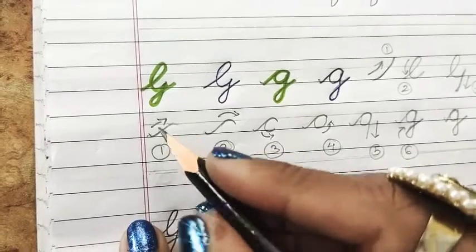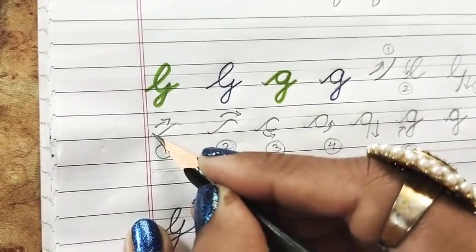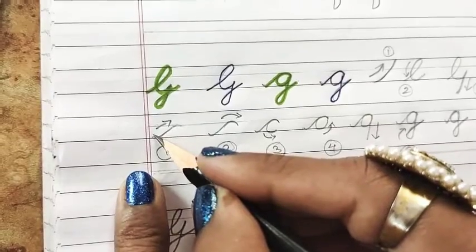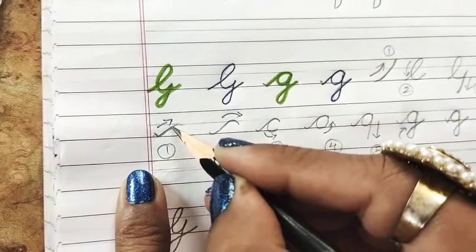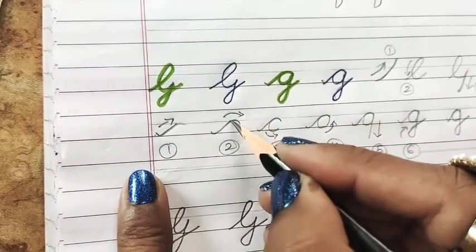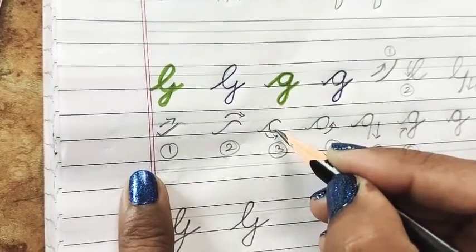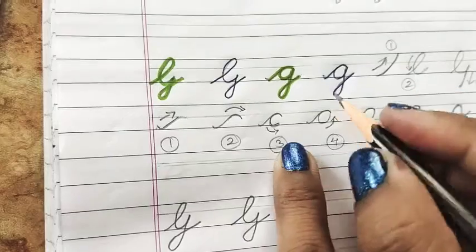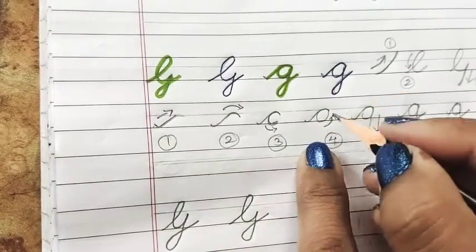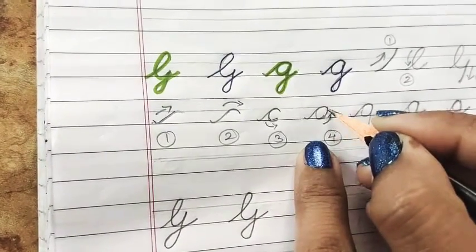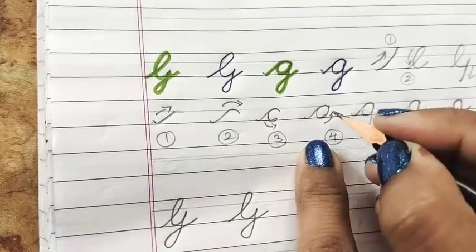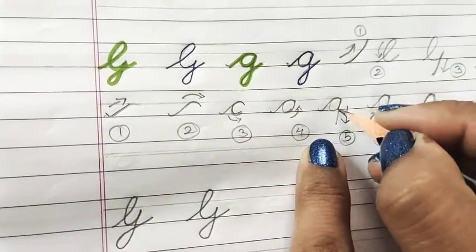For a, the same structure what we made for small a. Also a small tick mark like structure, then form a curve, bring it back just like a small c. Small c, then join it over here. After joining it, drag it down.